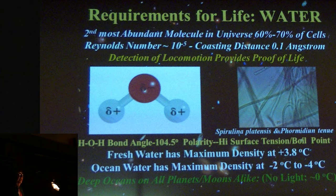The maximum density of fresh water is at plus 3.8 Celsius, and ocean water about minus 2 to minus 4. That's a very important point — since water has that maximum density and it sinks, the seafloor of all deep bodies of water anywhere in the universe will be essentially identical: a temperature very near zero Celsius, either fresh or salty, with slightly high or low pH. There are microorganisms that can live in and love those conditions, meaning the deep oceans of all planets and moons are alike, and terrestrial biology would have no problem whatsoever inhabiting those environments.